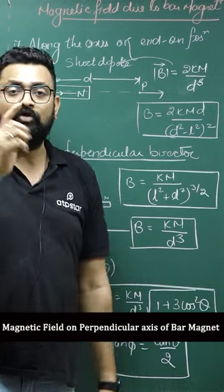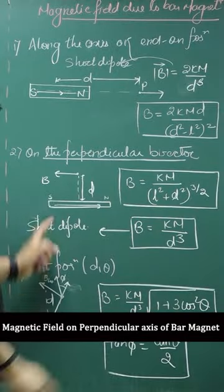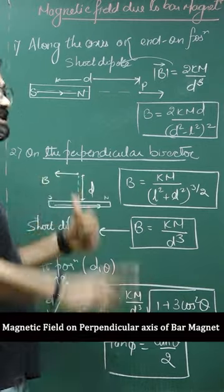Where value of K is mu naught upon 4 pi. But the important thing that I have to remember is magnetic moment in opposite direction.